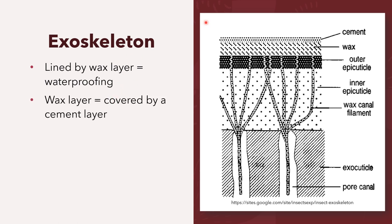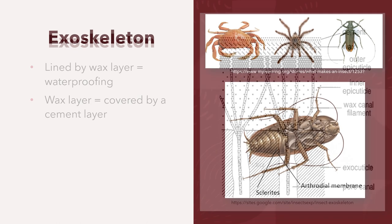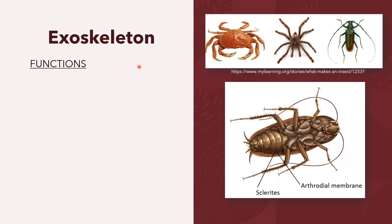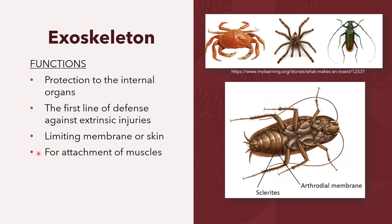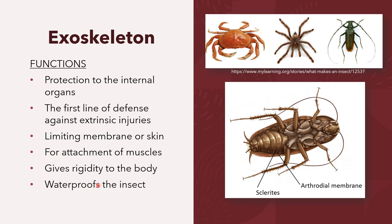The wax layer is covered by a cement layer, whose function is to protect the vital wax layer. The important functions of the arthropod exoskeleton include: protection of the internal organs, serving as the first line of defense against extrinsic injuries, limiting water loss through the skin, attachment of muscles, giving rigidity to the body, and waterproofing the insect.